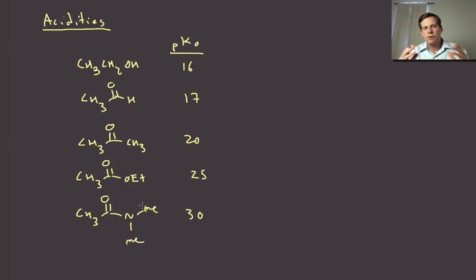These are all just general numbers and you don't have to remember them, but there's an important point we need to talk about, which is that if you're going to form an enolate, you really want to form it. You don't want to screw around.